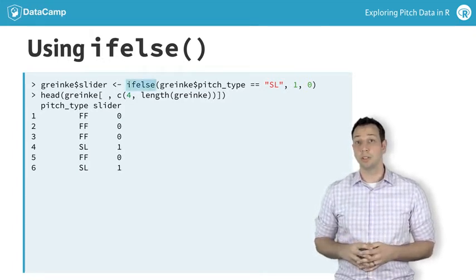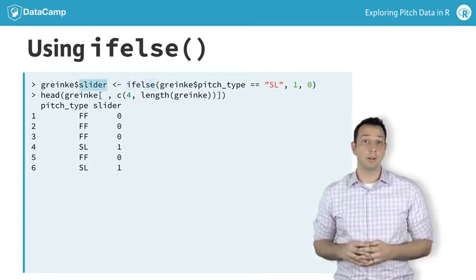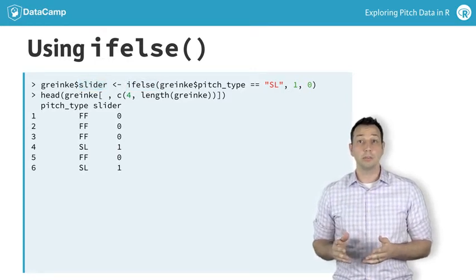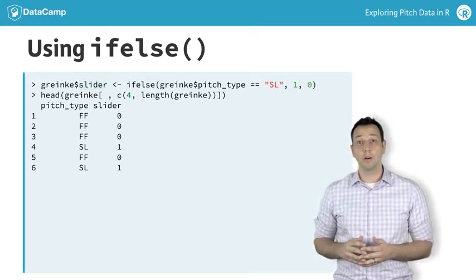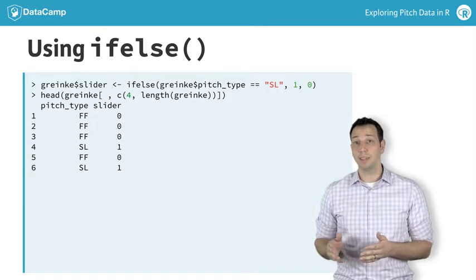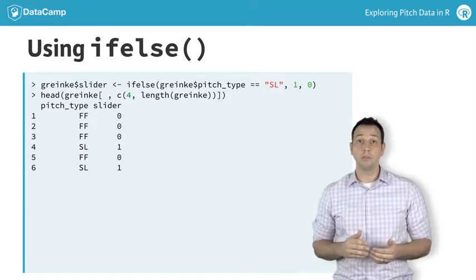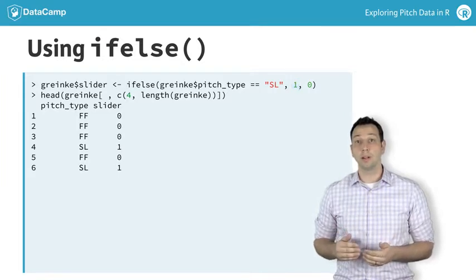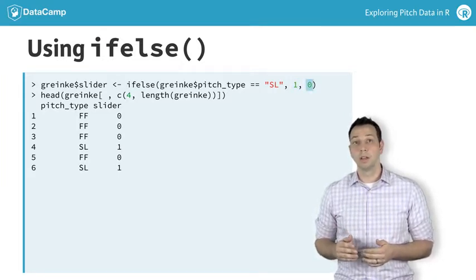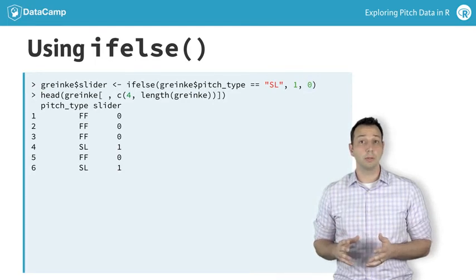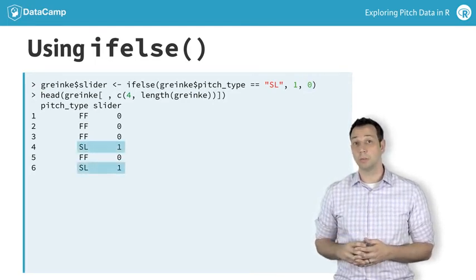First, we'll use the ifelse function to make a new variable called slider. The ifelse function simply tells R that if the pitch_type variable is equal to SL, then we want our new variable to be equal to 1. Otherwise, we make the variable equal to 0. Notice that the ones in the new variable line up perfectly with the SL code in the pitch_type variable.